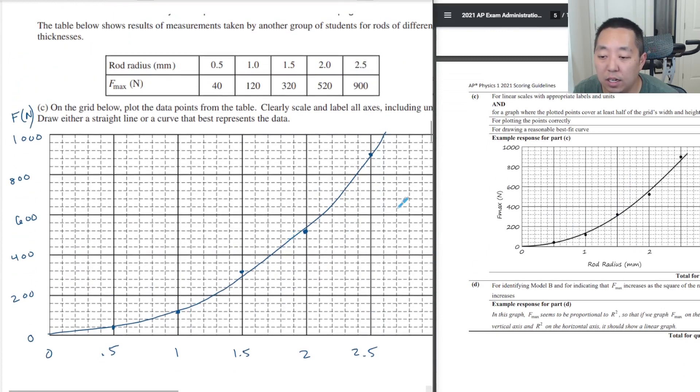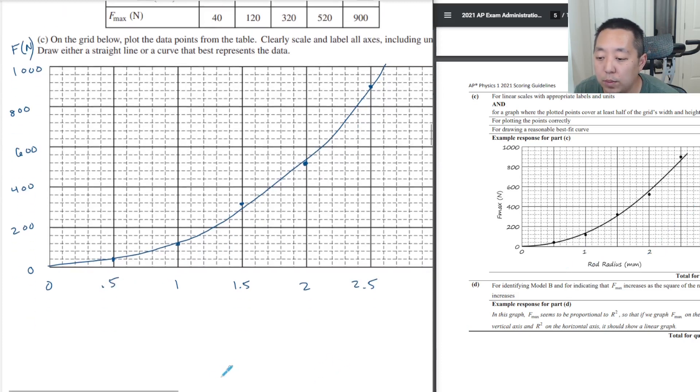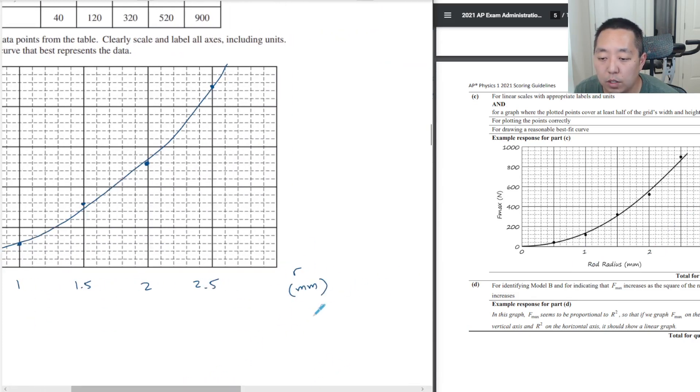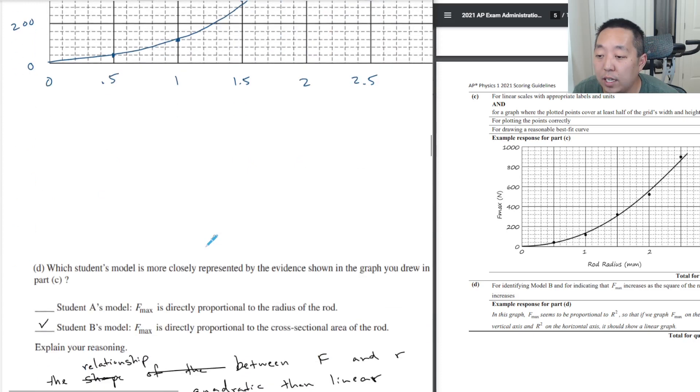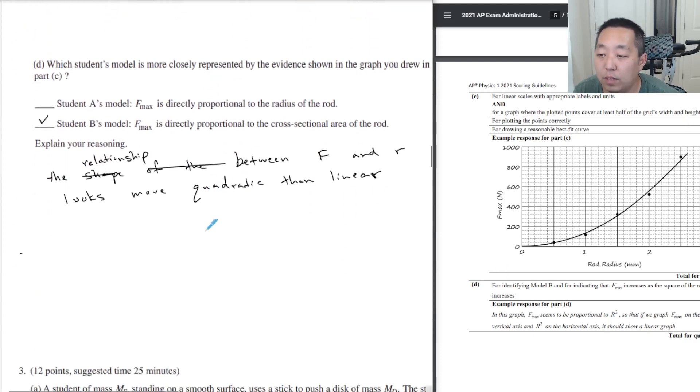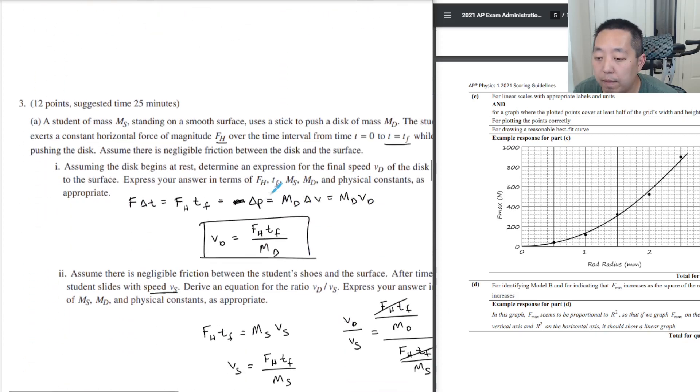When I did this, I put those solid dots on where it was supposed to be quadratic. I just kind of drew a curve. You got one point for linear scales with appropriate labels and units. I didn't put, did I put units? Right there on the right, I put units. For plotting points correctly. I think I did that right. Drawing a reasonable best fit curve. I can't freehand on a tablet as well as I can do on paper, but that's fine. For identifying model B and indicating F max. So that was for part D identify model B. Students model B, the relationship F and R looks more quadratic than linear. For an example, increases squares or radius.